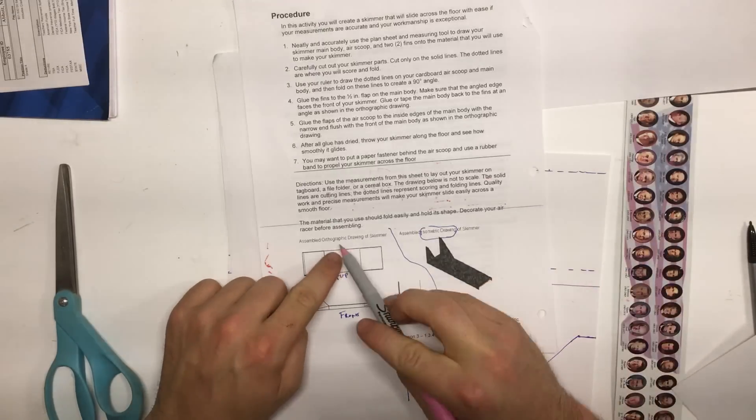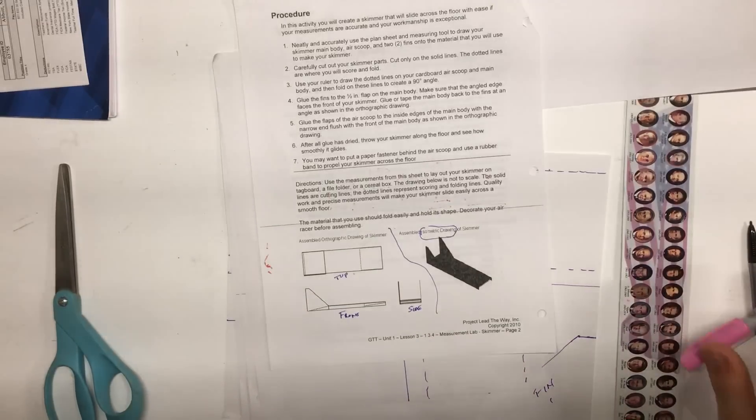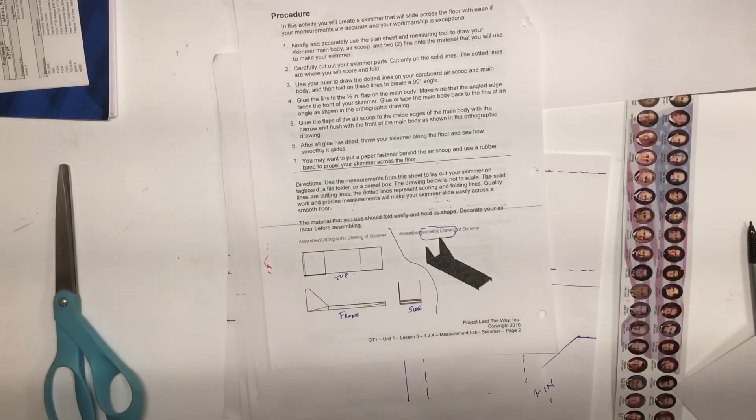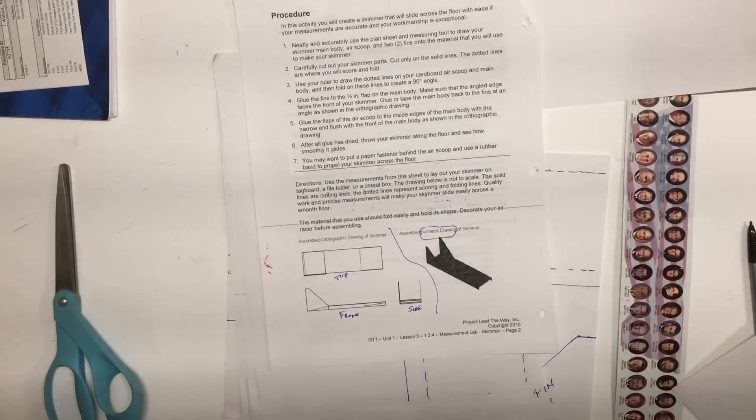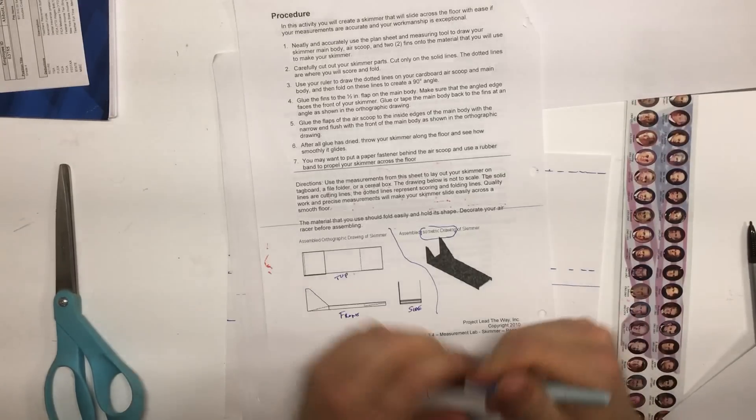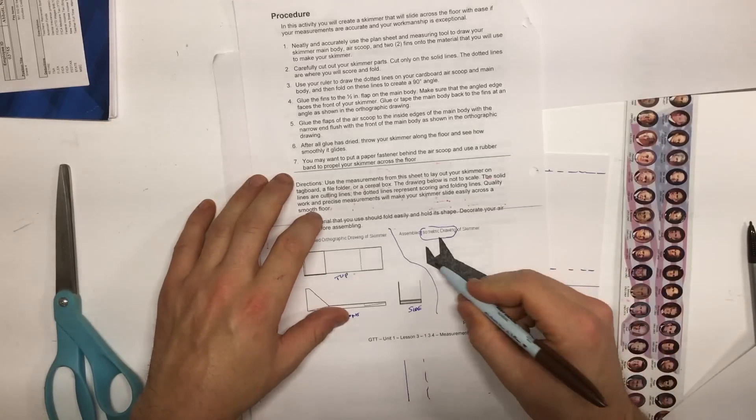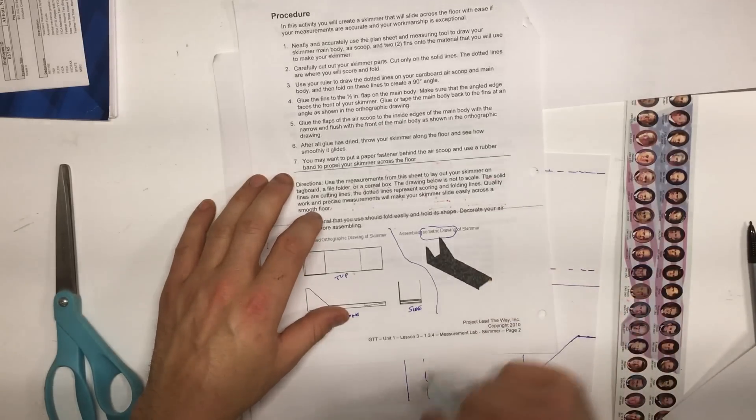Once again this is an orthographic drawing. Next, I'd like you to identify the isometric drawing on the right of your sheet. The isometric drawing shows us the overall view of what the skimmer is going to look like when it's finished. I wish it wasn't in black because you'd be able to see the better detail, but you'll notice the air scoop, the two fins, and the main body panel.